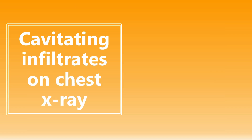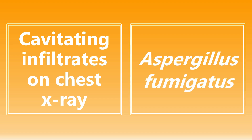Moving on: cavitating infiltrates on a chest x-ray. This could be a couple different things, but really one of the big ones is going to be Aspergillus fumigatus. It could also be Mycobacterium tuberculosis, but typically if they're mentioning something like this or showing an x-ray with cavitating infiltrates, it's going to be Aspergillus fumigatus.